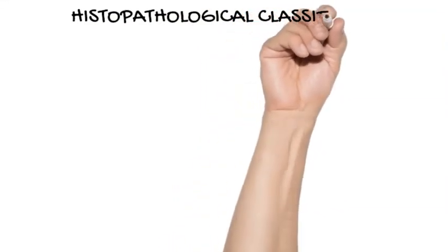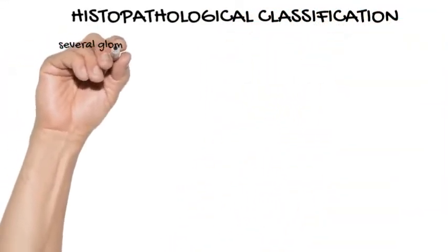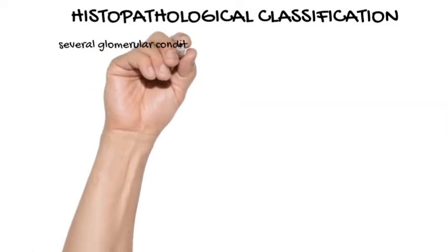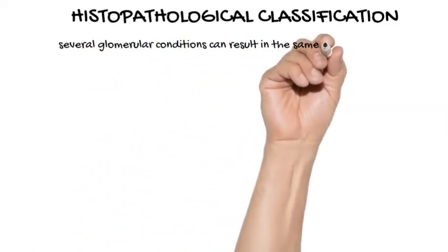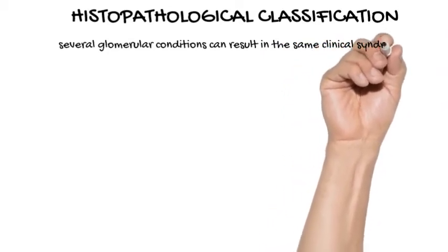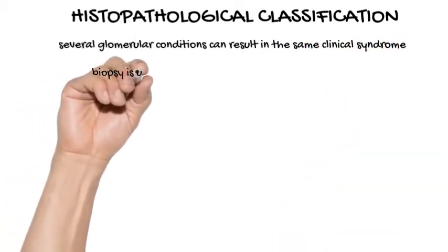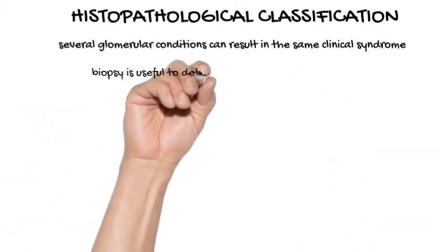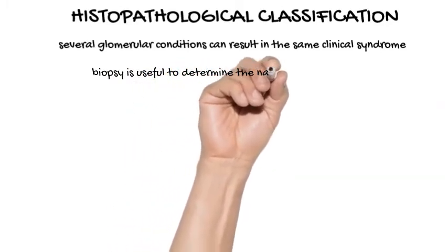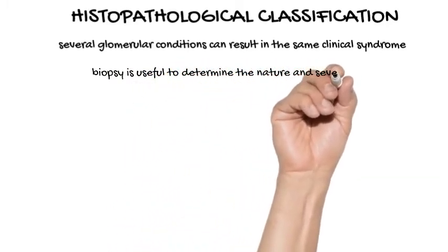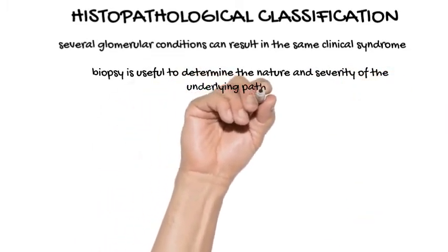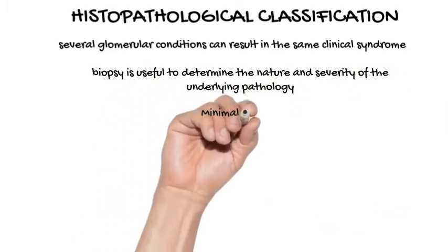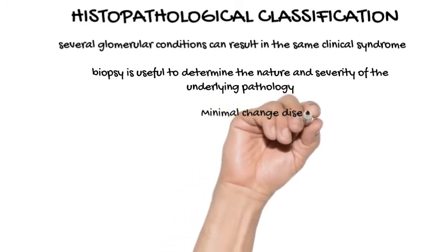Histopathological classification. Although the clinical presentation can often provide clues to the underlying glomerular pathology, a renal biopsy is often necessary, as several glomerular conditions can result in the same clinical syndrome. The biopsy is useful to help determine the nature and severity of the underlying glomerular pathology, to prognosticate, and to guide treatment. A simplified histopathological classification for primary glomerulonephritis is listed.